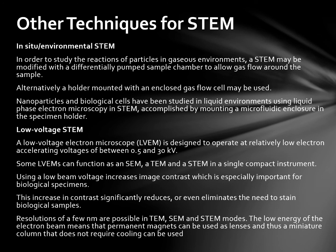Low-voltage STEM microscopes are designed to operate at relatively low electron accelerating voltages of between 0.5 and 30 kV. Some LVEMs can function as a SEM, a TEM, and a STEM in a single compact instrument. Using a low beam voltage increases imaging contrast, which is especially important for biological specimens, and significantly reduces or even eliminates the need to stain biological samples. Resolution of a few nanometers is possible in TEM, SEM, and STEM modes. The low energy of the electron beam means that permanent magnets can be used as lenses, and a miniature column that does not require cooling can be used.